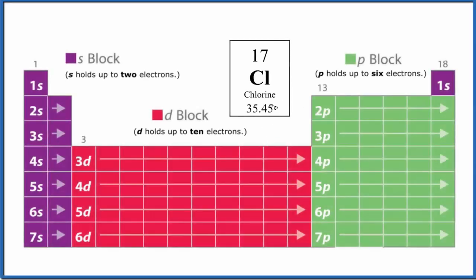In this video, we'll write the atomic orbital diagram for chlorine. Before we do that, we should write the electron configuration, and we'll just follow this pattern here on the periodic table.